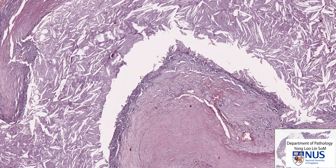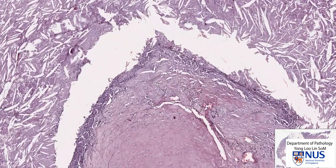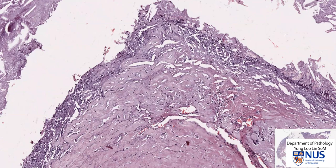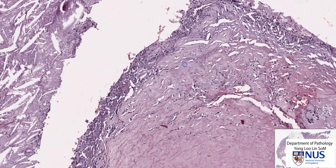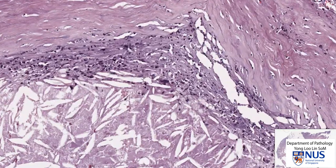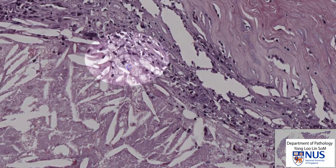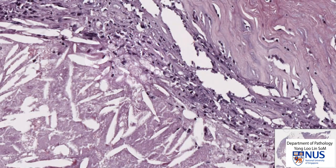This is part of the fibrous cap of the atheroma, and this is composed of fibroblasts, some inflammatory cells, and sometimes we can also see smooth muscle cells. In some areas we can just make out a few foamy cells — for example, over here we can see some macrophages with abundant bubbly pale lipid-rich cytoplasm.